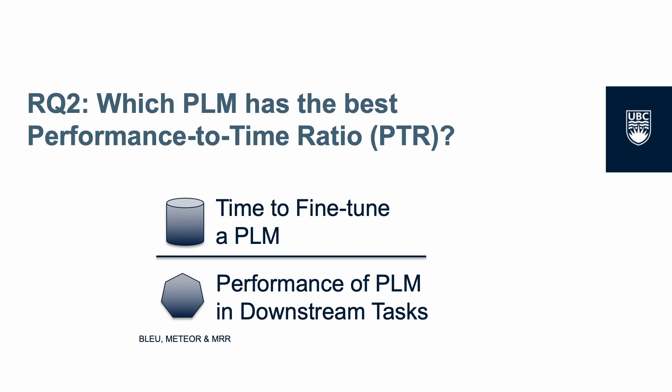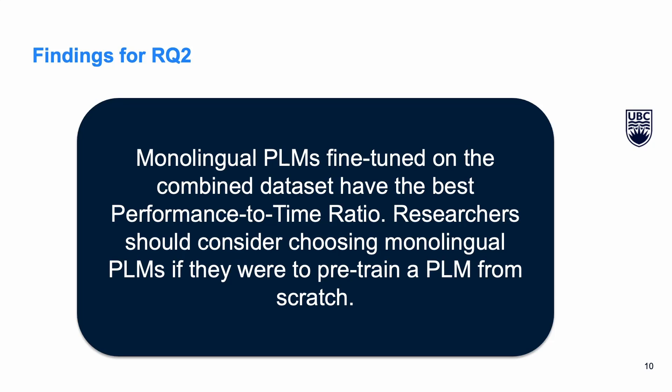Although the performance of a PLM is important, training a PLM is notoriously computationally expensive. In RQ2, we are interested in the PLMs that have the best trade-off between performance and training time. We compute the performance-to-time ratio by measuring the training time to fine-tune a PLM and comparing it with its performance on downstream tasks. We observe that monolingual PLMs fine-tuned on the combined dataset have the best performance-to-time ratio, and researchers should consider choosing monolingual PLMs if pre-training from scratch.